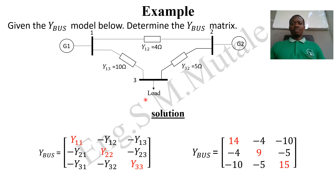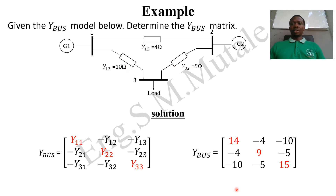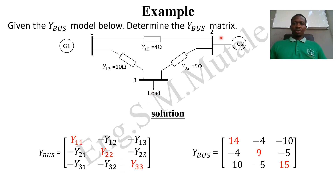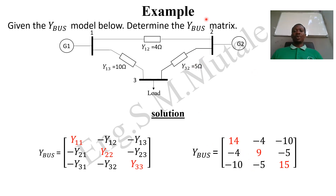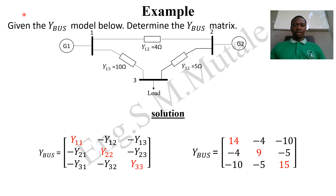For the third row, Y33 is the summation of all admittances connected at bus three: 10 + 5 = 15. Y31 is the admittance between bus three and bus one, which is 10, so it is -10. Y32 is the admittance between bus three and bus two, which is 5, so it is -5. That is how we build the Y-bus matrix. Thanks for watching.